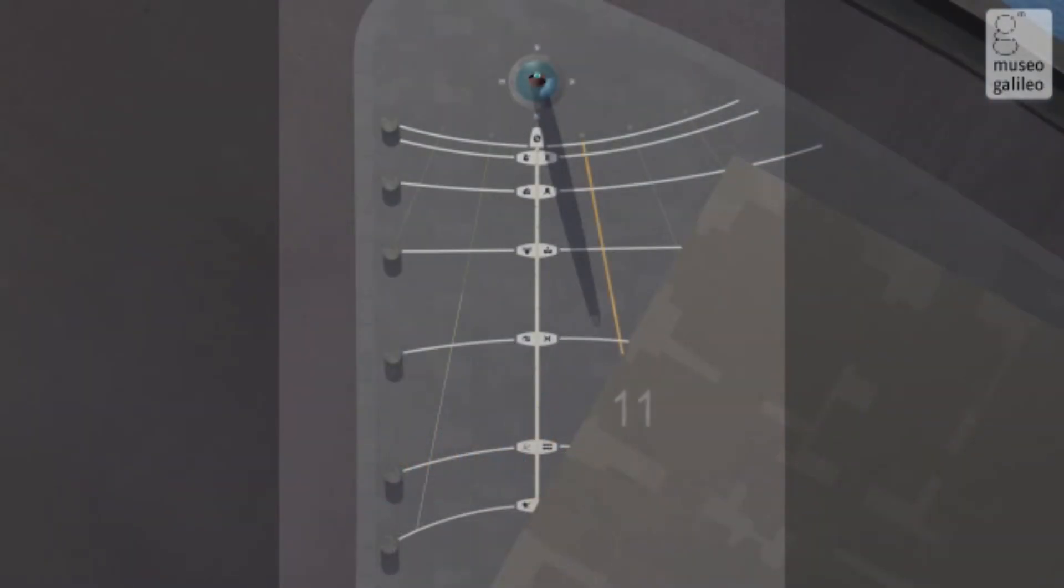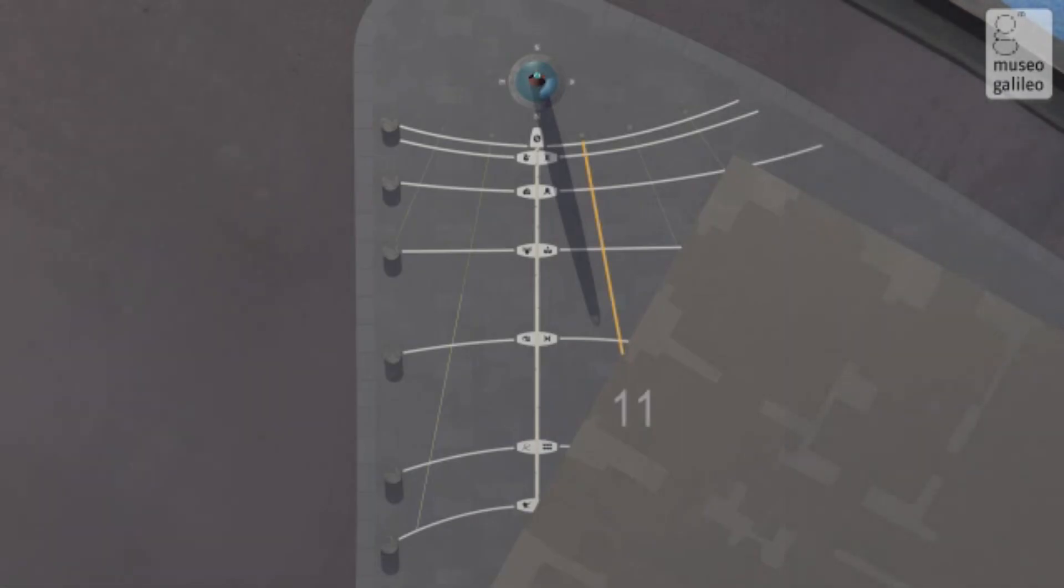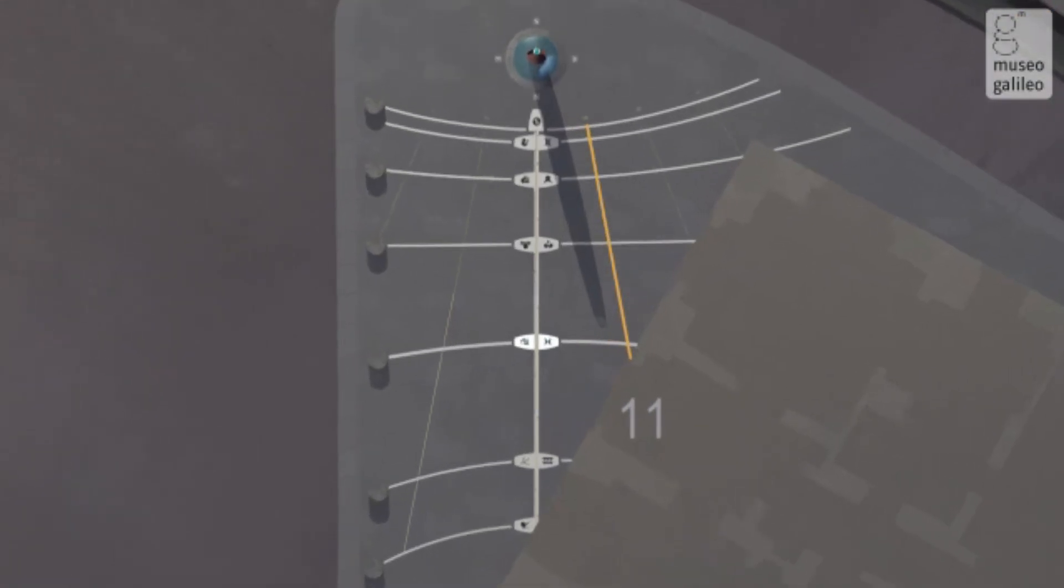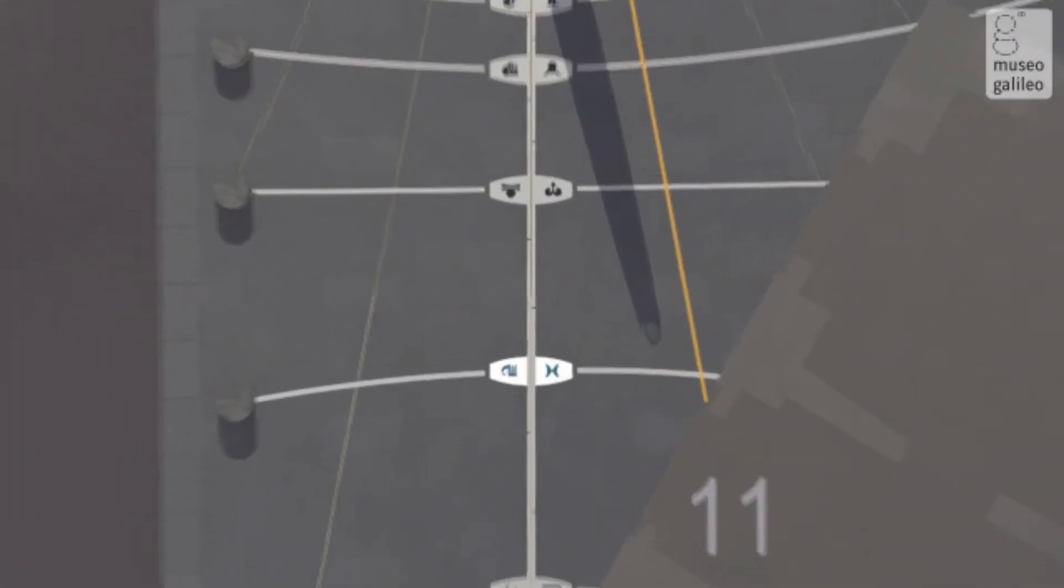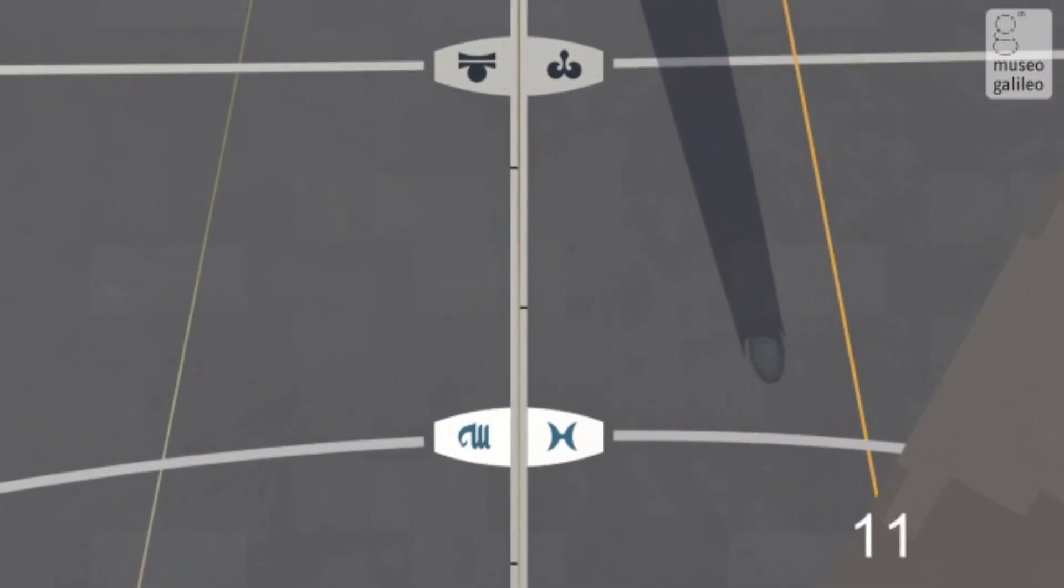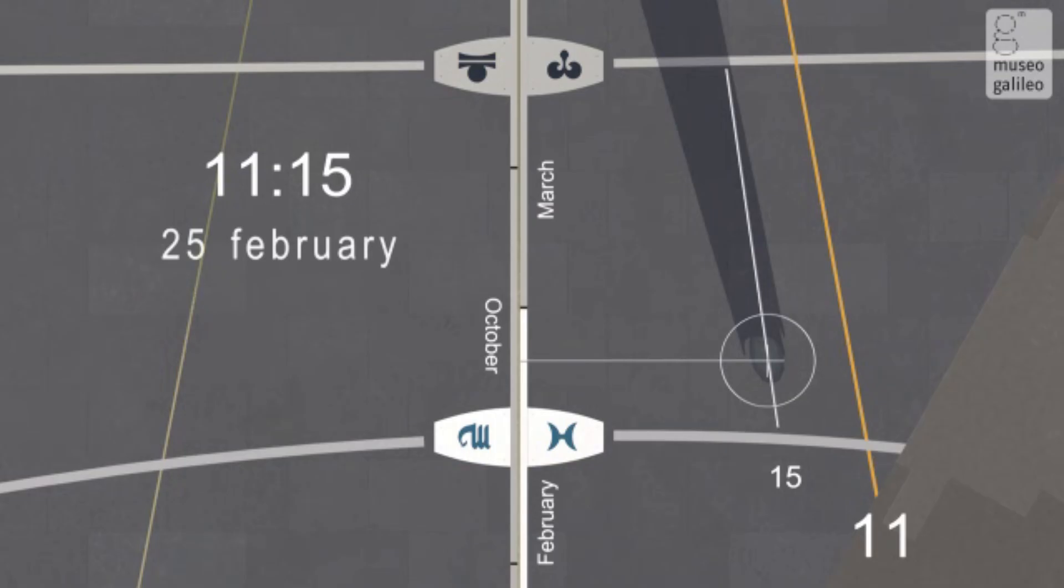To read the hour and date, you have to identify the hour lines and the calendrical lines closest to the gnomon's shadow. When the shadow does not fall exactly on the hour line, you can read the half hour and quarter hour with close approximation, ideally subdividing the space between two hour lines in two or four parts. The date can also be read by referring to the zodiac signs at the start of the months marked out along the meridian line.